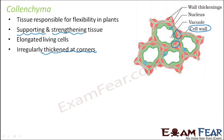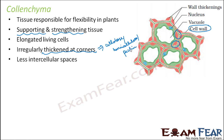So what is this thickening? The thickened corners are made up of cellulose, hemicellulose, and pectin. These are the composition of the thickened corners. Talking about the intercellular spaces, here the intercellular spaces are quite less — in this picture we almost don't see any intercellular space.